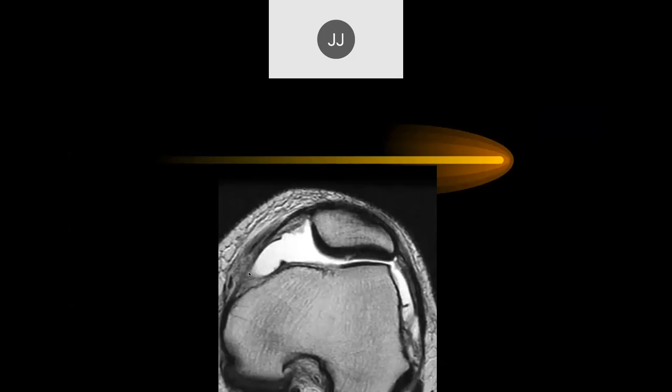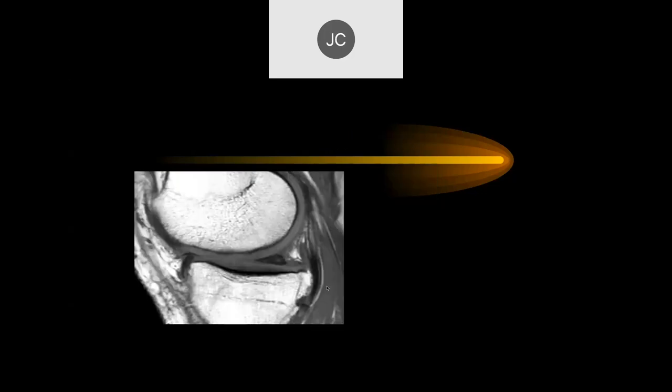On the axial of the knee, there's a small full thickness fissure of the lateral patellar facet and some dysplastic — probably a shallow trochlear groove. So that's an acute cartilage tear.